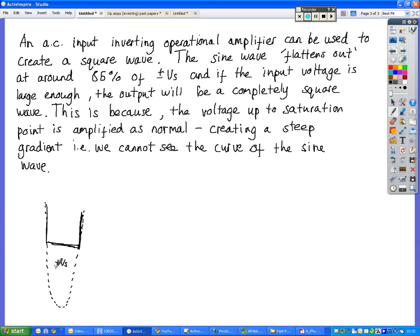Plus or minus Vs is up here somewhere, and this is about 85% of plus or minus Vs. So saturation can be used with an inverting amplifier with an AC input to create a square wave.